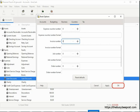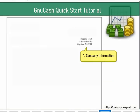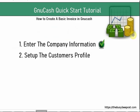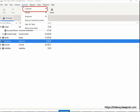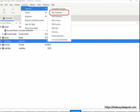Here is an example of the company information as displayed on the invoice. Next, we need to set up the customer's profile for each customer we want to create an invoice for. Begin by selecting Business, then Customer, then New Customer.